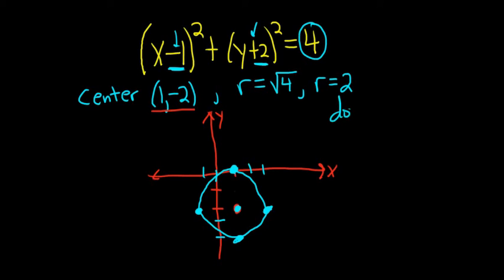To find the domain, the domain is all of the x values. Starting from the left, the smallest one is negative 1. It's always a bracket for circles. And the biggest one is 3.